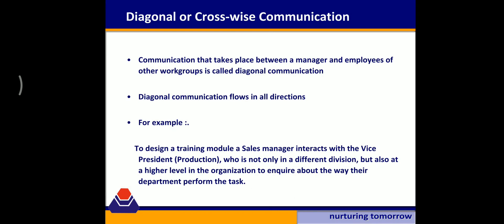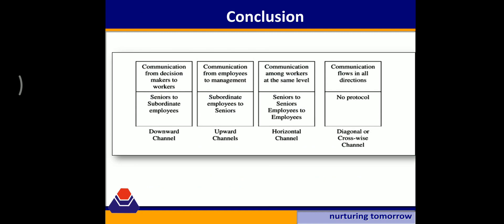The last flow of communication is known as diagonal or crosswise communication. Under this flow, various departments, ministries, or organizations communicate with each other. This communication takes place when a manager of a particular department communicates to employees of a different department, industry, or company. It flows in all directions. For example, for a training purpose, if a sales manager interacts with the Vice President of production — who is not only in a different division but also at a higher level — that is a good example of diagonal or crosswise communication.